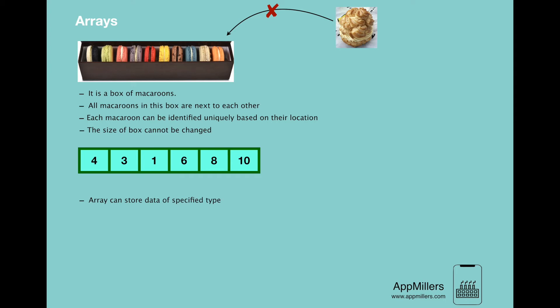So the first property is that array can store data of specified type. This means that when we create an array of integers, we cannot store string values in this array. So if we try to insert this value to this array, it will raise error. We cannot do that.